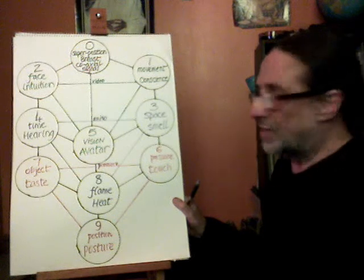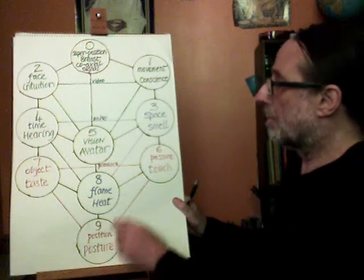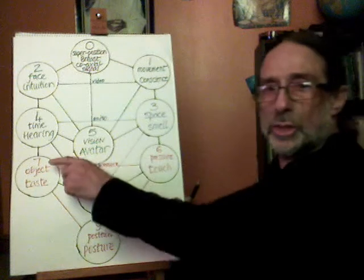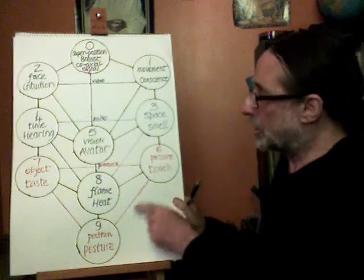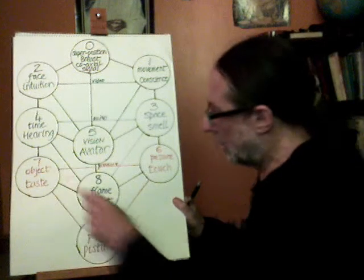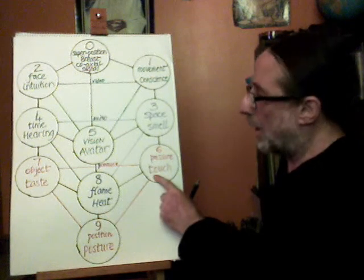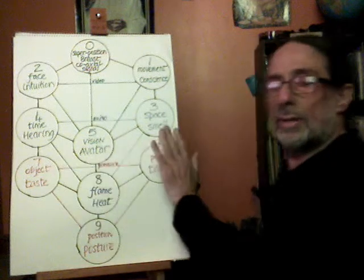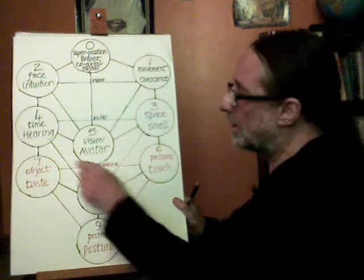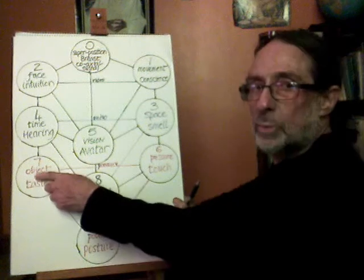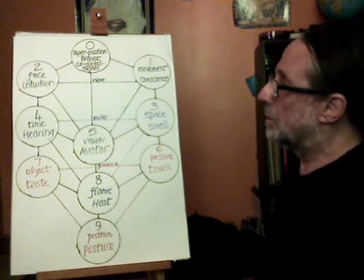And then we have the contact senses: touch, taste, and posture. And this is the pressure signal. You get a pressure signal, and you've got the differential there, which shows whether it's going to be held or moved. Then you've got the integral there, which identifies the object and moves it around in a position.